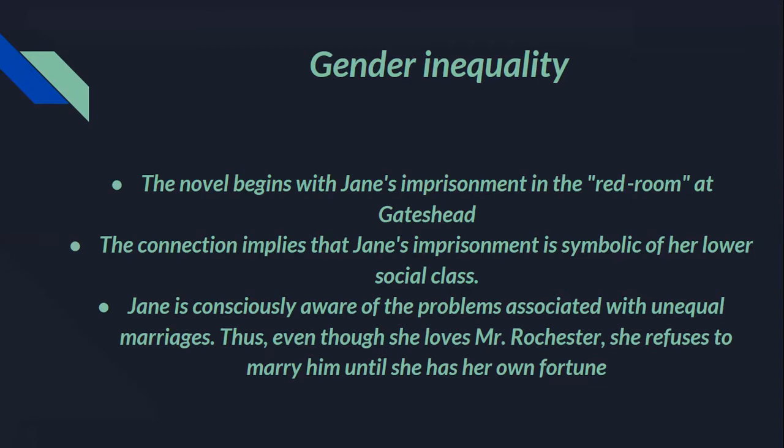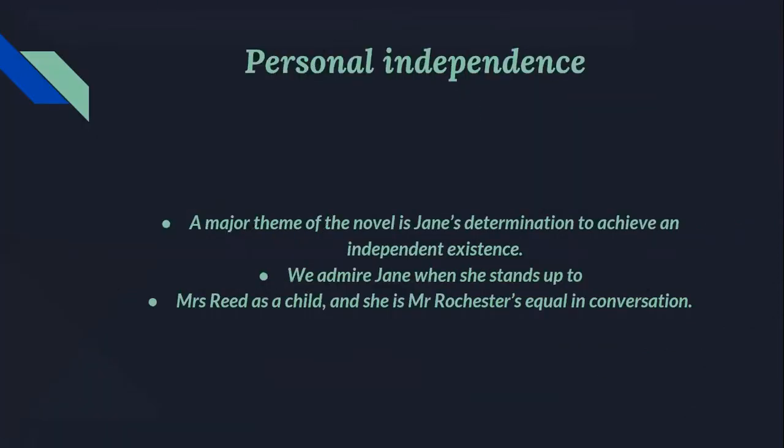One of the major themes of this novel is personal independence — Jane's determination to achieve an independent existence without sacrificing her principles. It is beyond her expectations that a man of her higher class should return her love, but she can only agree to live with him on equal terms. Bronte gave Jane her own qualities: sharp intelligence, a passionate nature, a clear conception of moral responsibilities, and above all, great courage and determination. We admire Jane when she stands up to Mrs. Reed and holds her own as Mr. Rochester's equal in conversations.